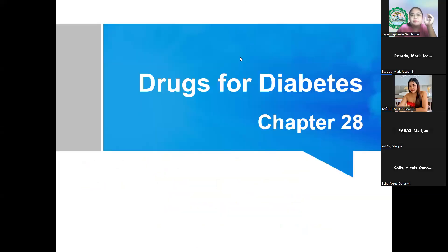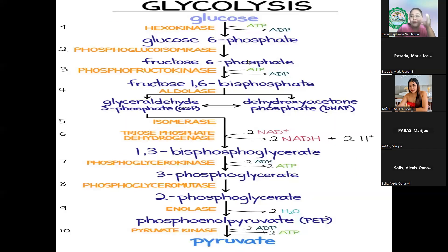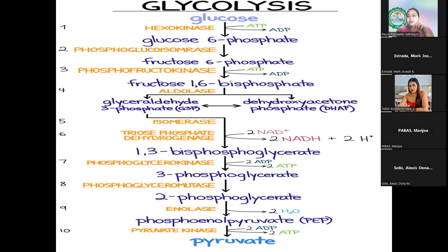This morning we will be talking about the drugs for diabetes mellitus. However, before we dig into the drugs, we will be discussing the pathophysiology first, and that includes your biochemistry concepts on carbohydrates. Let's start with glucose — our physiological sugar. We maintain a certain amount of glucose in the body. When it's low, we call that hypoglycemia; when it's too high, we call that hyperglycemia.